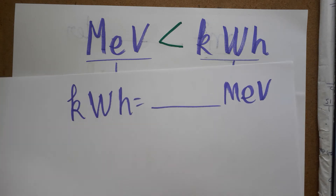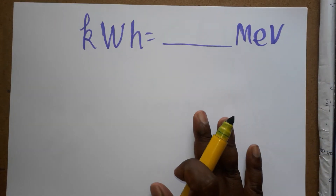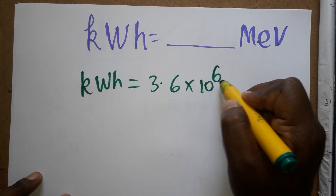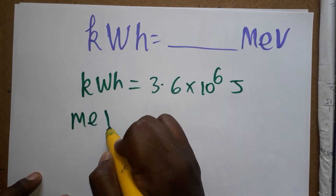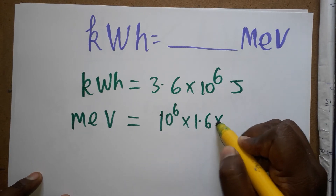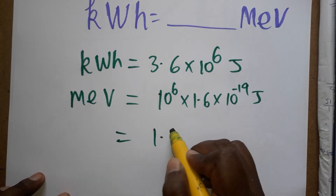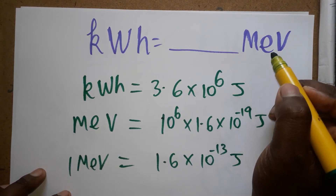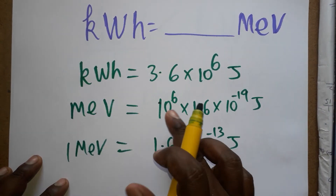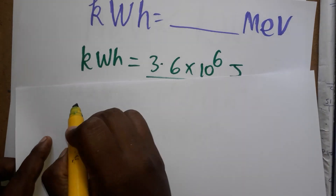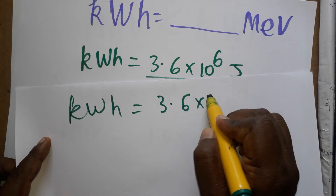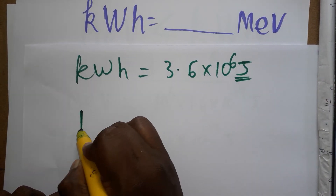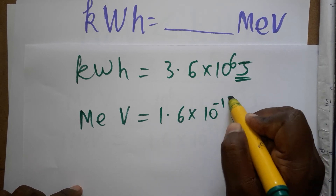Now we are going to learn: 1 kWh is equal to how many MeV? We already know 1 kWh equals 3.6 into 10 to the power 6 joules, and one MeV equals 1.6 into 10 to the power minus 13 joules. To convert kWh to MeV, we need to convert joules to MeV. Since 1 MeV = 1.6 × 10⁻¹³ joules, then 1 joule equals 1 divided by 1.6 × 10⁻¹³ MeV.